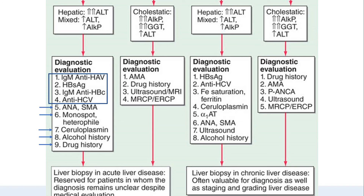For acute cholestatic pattern, workup includes AMA for primary biliary cirrhosis, drug history for drug-induced liver injury, and ultrasound, MRI, MRCP, or ERCP to rule out surgical or obstructive causes of jaundice. For chronic hepatic pattern, evaluation includes HBsAg and anti-HCV antibody — remember that hepatitis B and C can progress to chronicity, whereas hepatitis A usually does not. Additional tests include iron saturation and ferritin for hemochromatosis, ceruloplasmin for chronic Wilson's disease, alpha-1 antitrypsin level, ANA and SMA for autoimmune hepatitis, and ultrasound with alcohol history for cirrhosis.